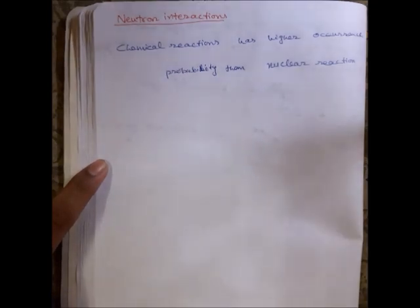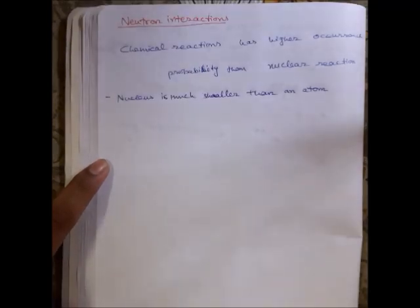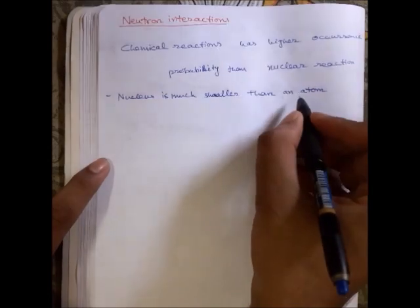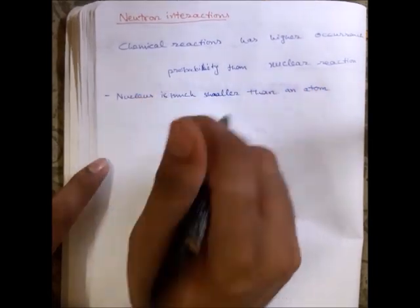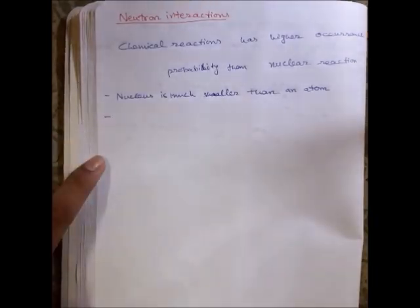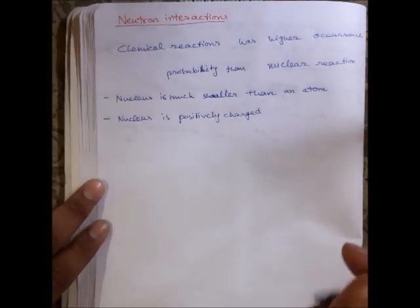The first reason is the nucleus is much smaller than an atom, so collision is very less likely to take place between a nucleus and an atom. The second reason is that the nucleus is positively charged.